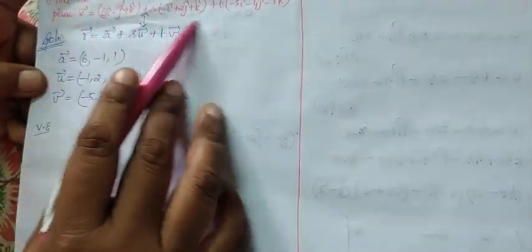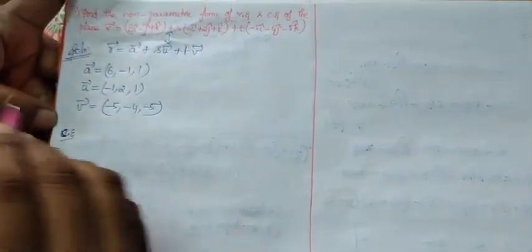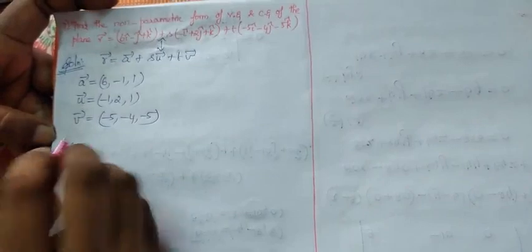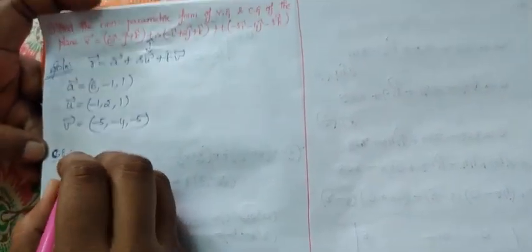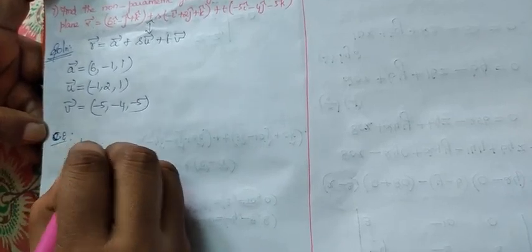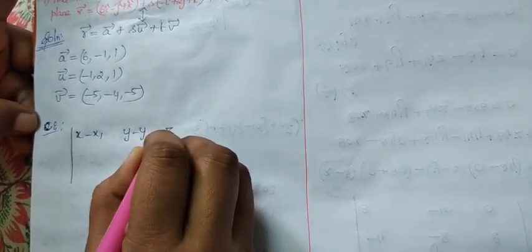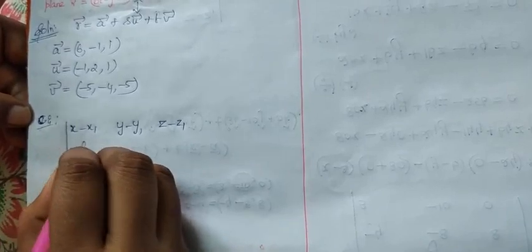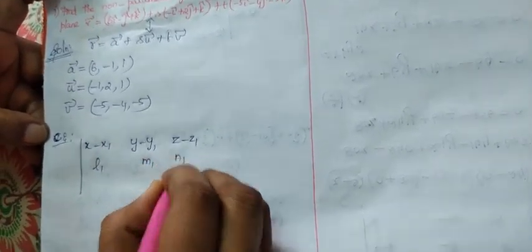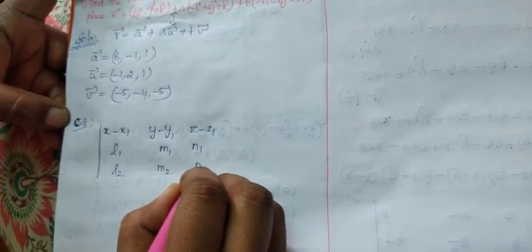They have given the vector equation, so no need to write it again. Come for the Cartesian equation, then we can find the non-parametric form of vector equation. The Cartesian equation here uses the determinant format: (x − x1), (y − y1), (z − z1) in the first row; l1, m1, n1 in the second row; l2, m2, n2 in the third row, equal to 0.